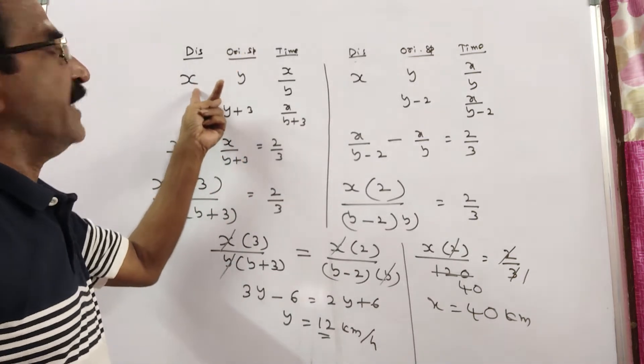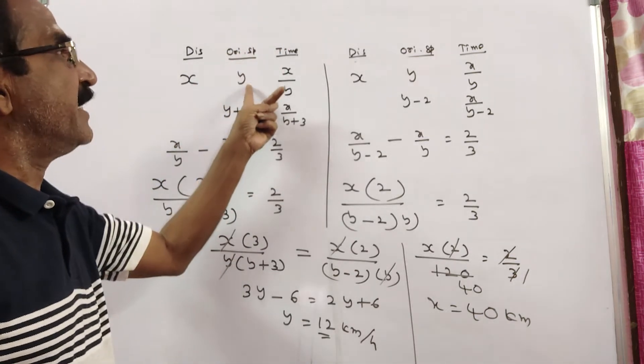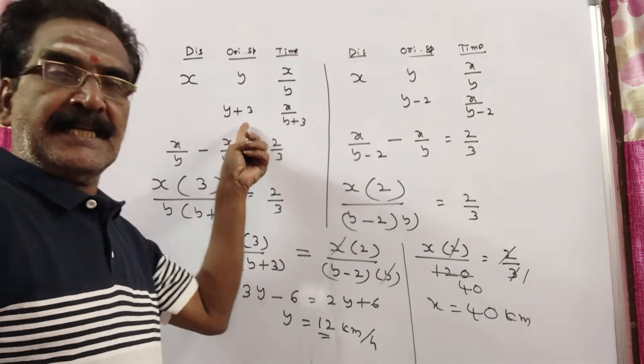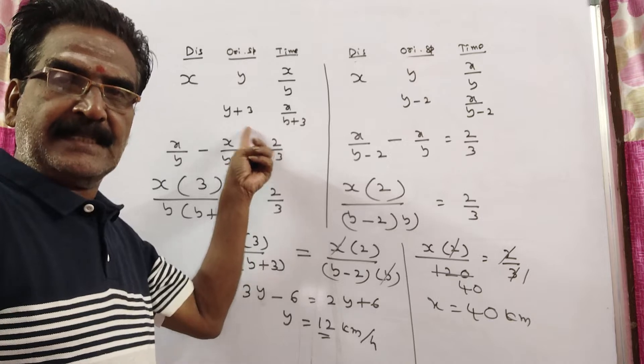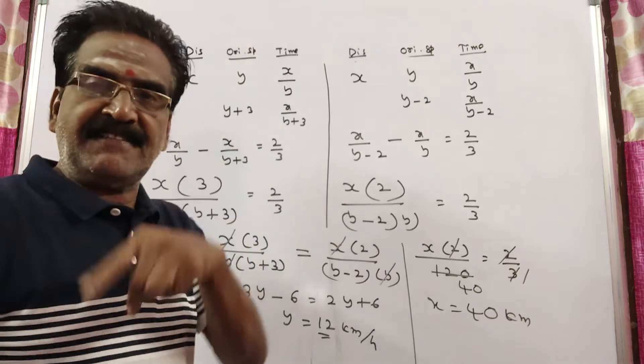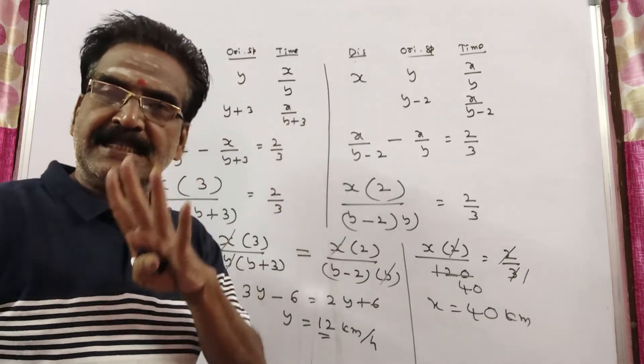Friends, say distance x, original speed y, then it takes x by y hours. If the speed is increased by 3 km/h, then it takes x by y plus 3 hours. It is given that it takes 40 minutes less.